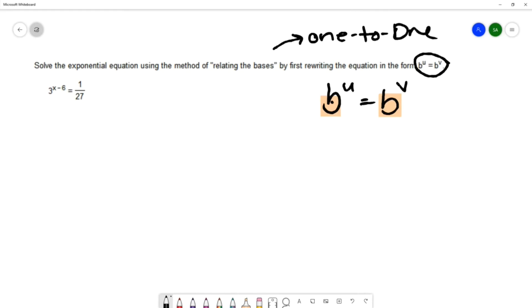The one-to-one property doesn't just apply to exponential functions, it applies to many types of functions. But what it tells us is that if the y's are equal to each other, if we have two y values that are equal to each other, then those x values must be equal to each other.